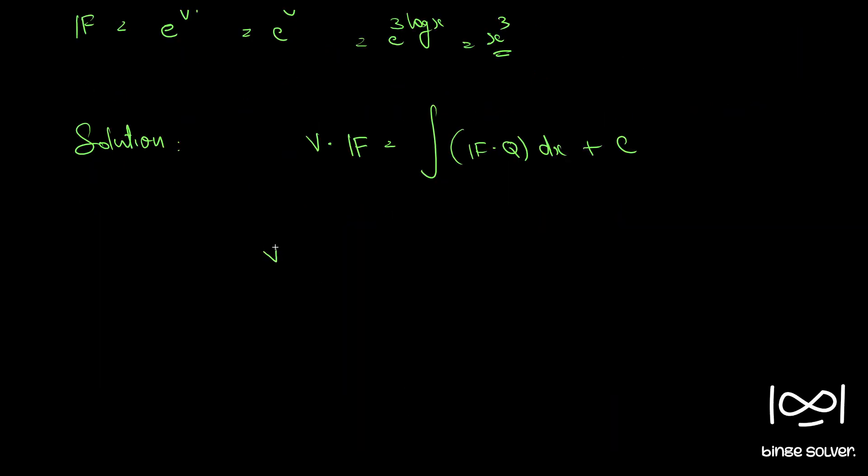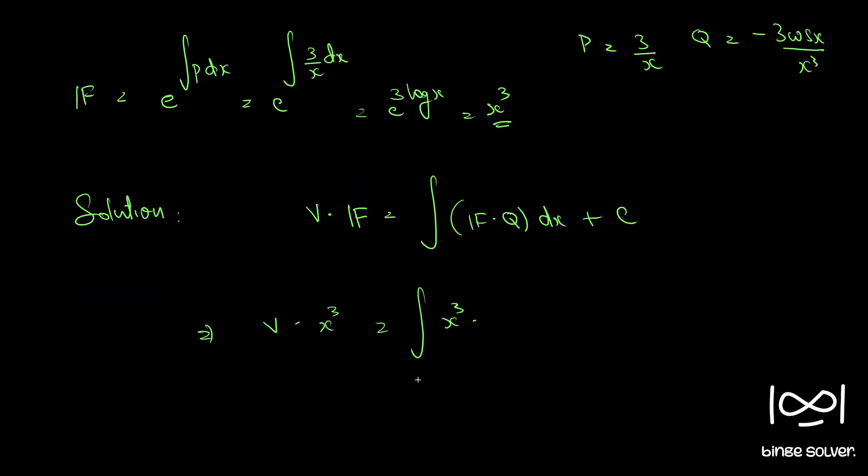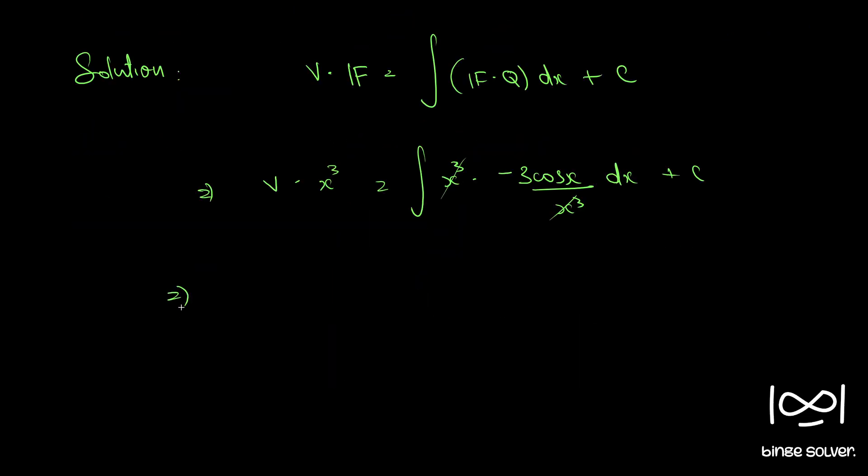So we have v into integrating factor is x cubed equal to integral x cubed into q, q is minus 3 cos x by x cubed. X cubed cancels. We have v x cubed equal to integral minus 3 cos x dx. So this becomes minus 3 sine x plus c.